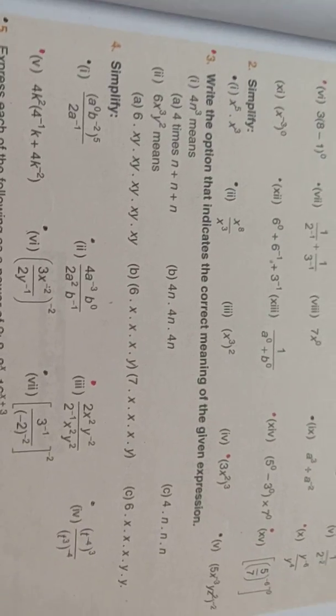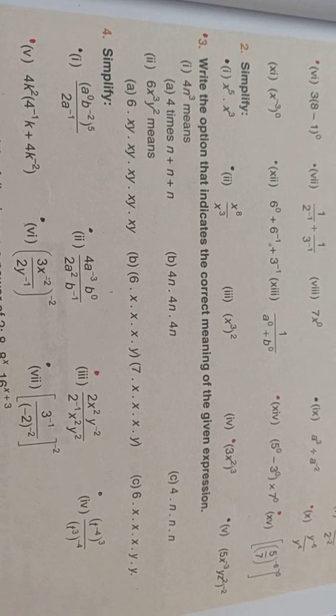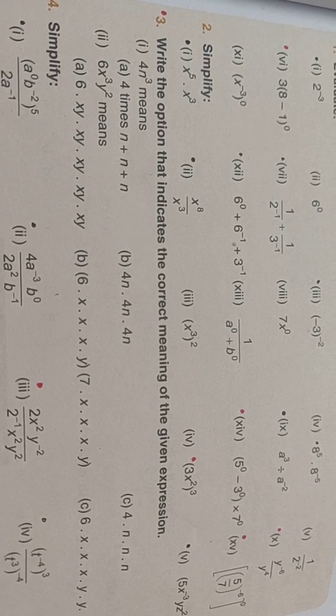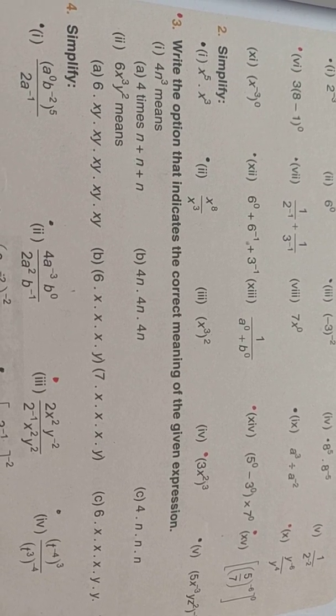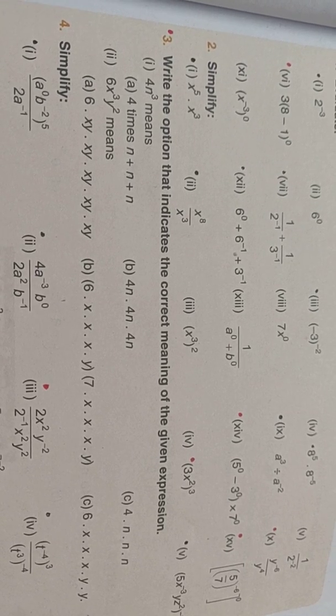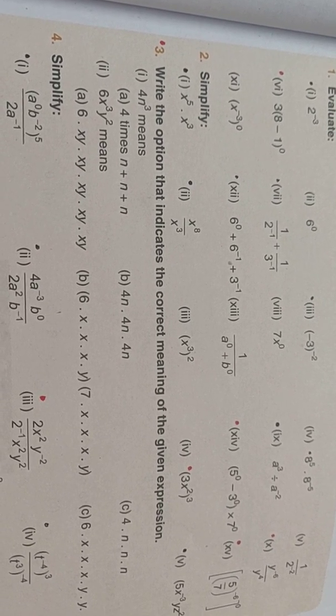Question number 3, you can pause the video, take a screenshot or write down the question. Question number 3 states: write the option that indicates the correct meaning of the given expression. You have two questions with options given. You have to find out which is the correct option.